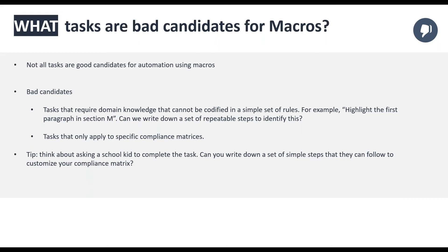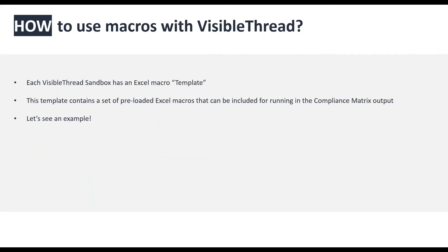A good tip is to think about asking a stranger — say a school kid — to describe the task you're trying to complete using the automation. Can they manually complete this task using the set of steps you write out? If they have no domain knowledge and no prior knowledge of your processes, and they can still complete the task, then it's possibly something you can automate using macros.